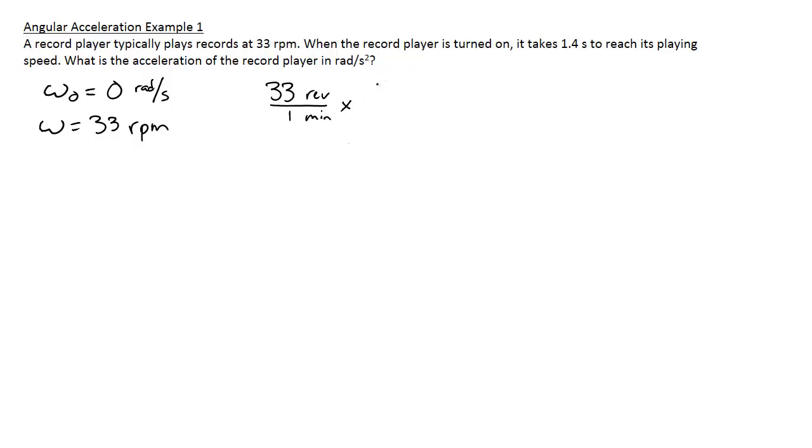In one minute we have 60 seconds, so I can cancel out the minutes and get revolutions per second. I also want to convert this to radians, so I know that there's two pi radians in one revolution.